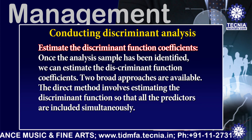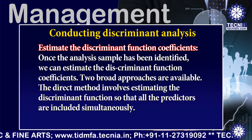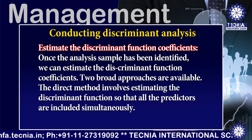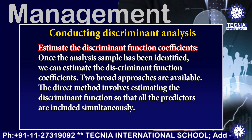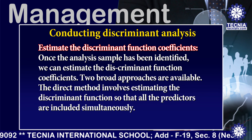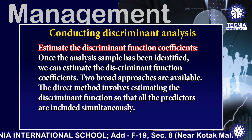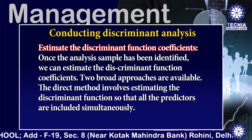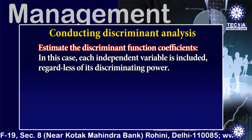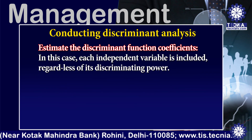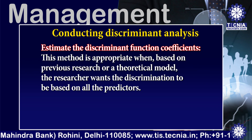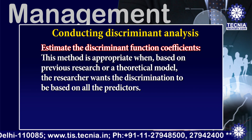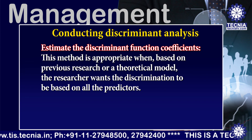Step 2 is to estimate the discriminant function coefficients. Once the analysis sample has been identified, we can estimate the discriminant function coefficients using two broad approaches. The direct method involves estimating the discriminant function so that all predictors are included simultaneously. Each independent variable is included regardless of its discriminating power, and this method is appropriate when the researcher wants discrimination to be based on all the predictors.